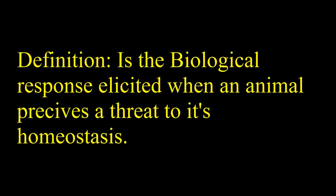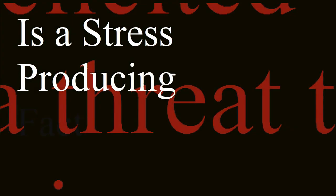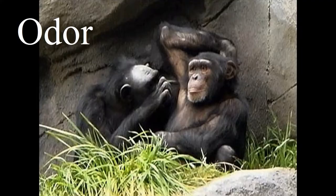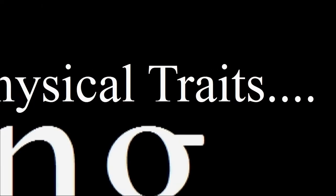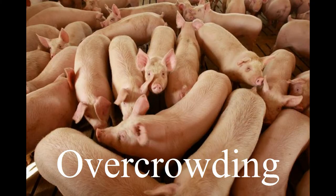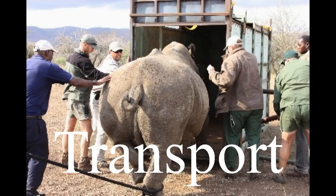Now let's talk about stress. Stress is the biological response elicited when an animal perceives a threat to its homeostasis. The threat is a stress-producing factor. Physical threats are temperature changes, sights, sounds, odor, hunger, and thirst. Psychological threats are anxiety, frustration, and overcrowding.